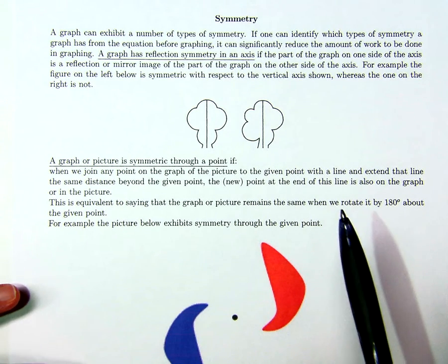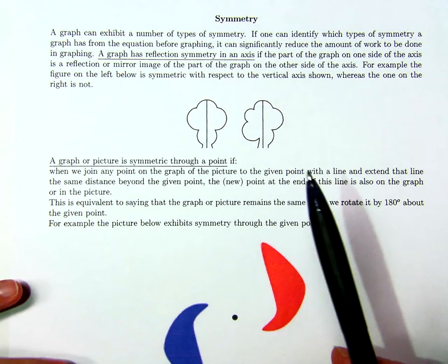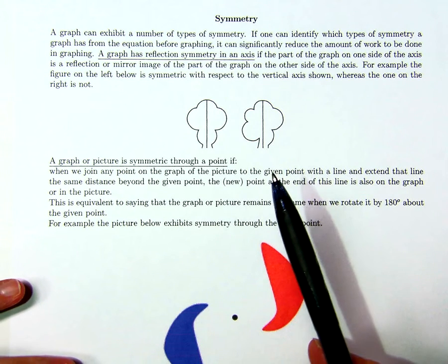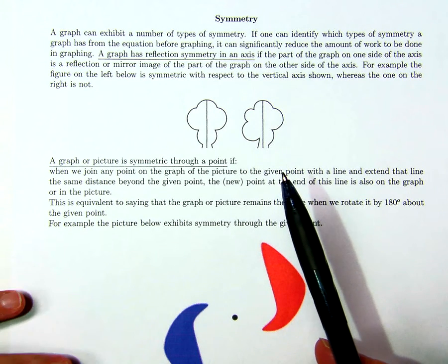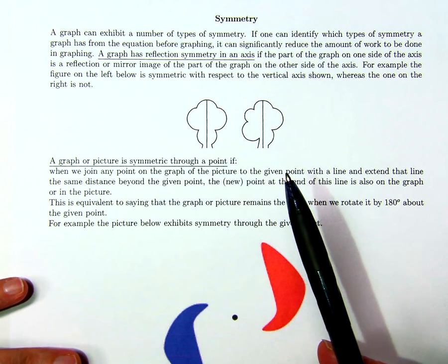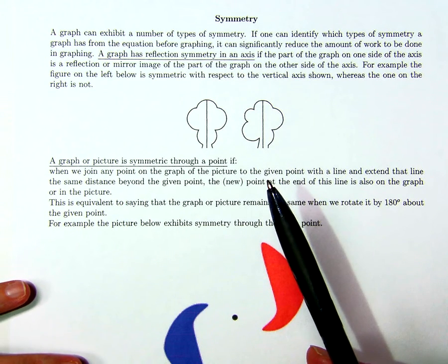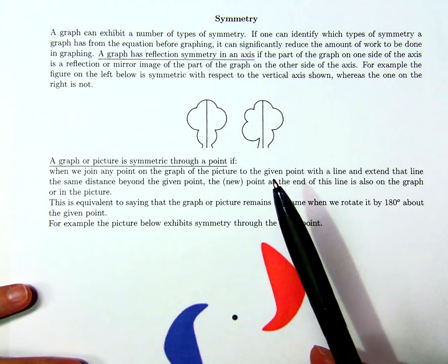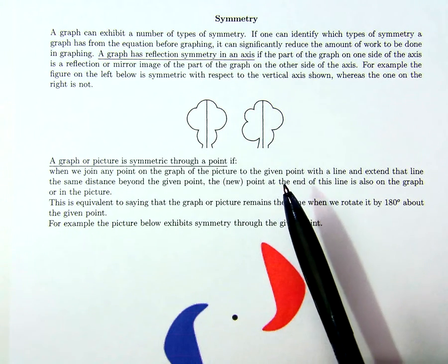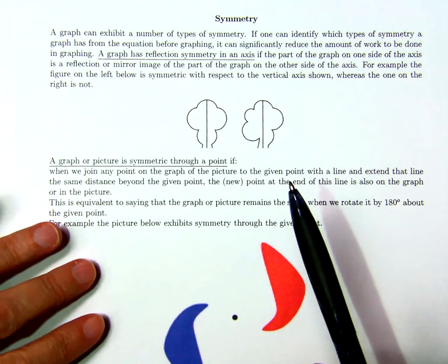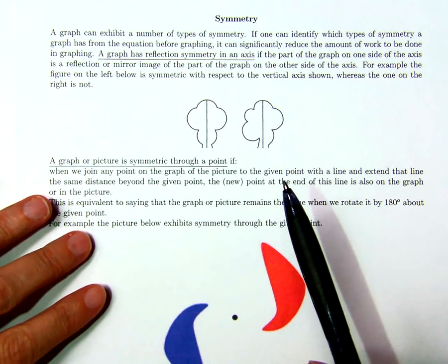A graph might exhibit a number of types of symmetry, or one type of symmetry, and if we could identify the symmetries of a graph before we draw it, we could significantly reduce the amount of work we have to do in graphing.